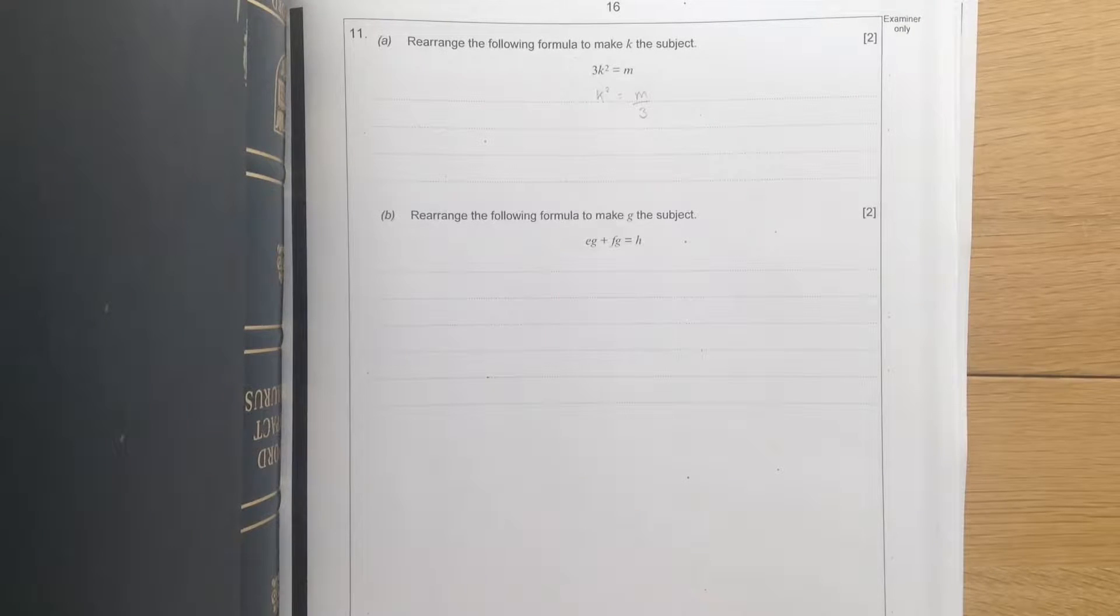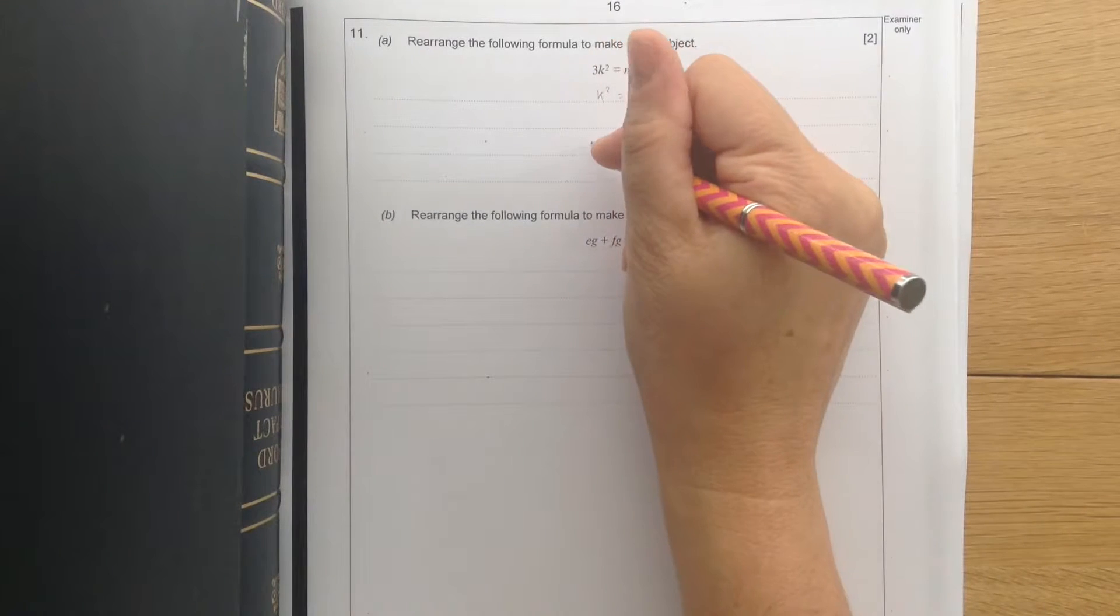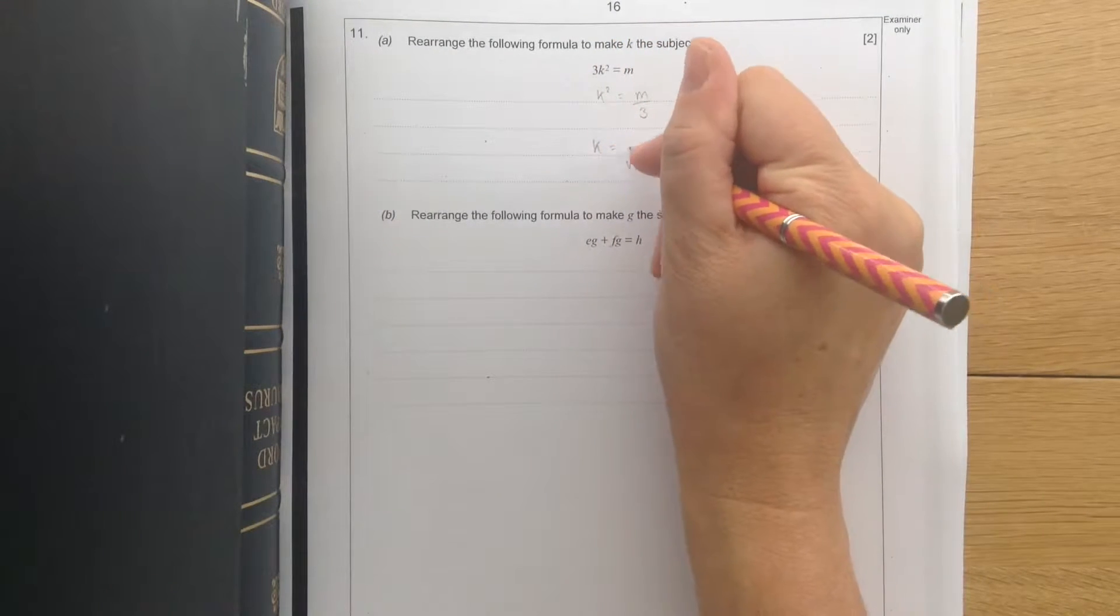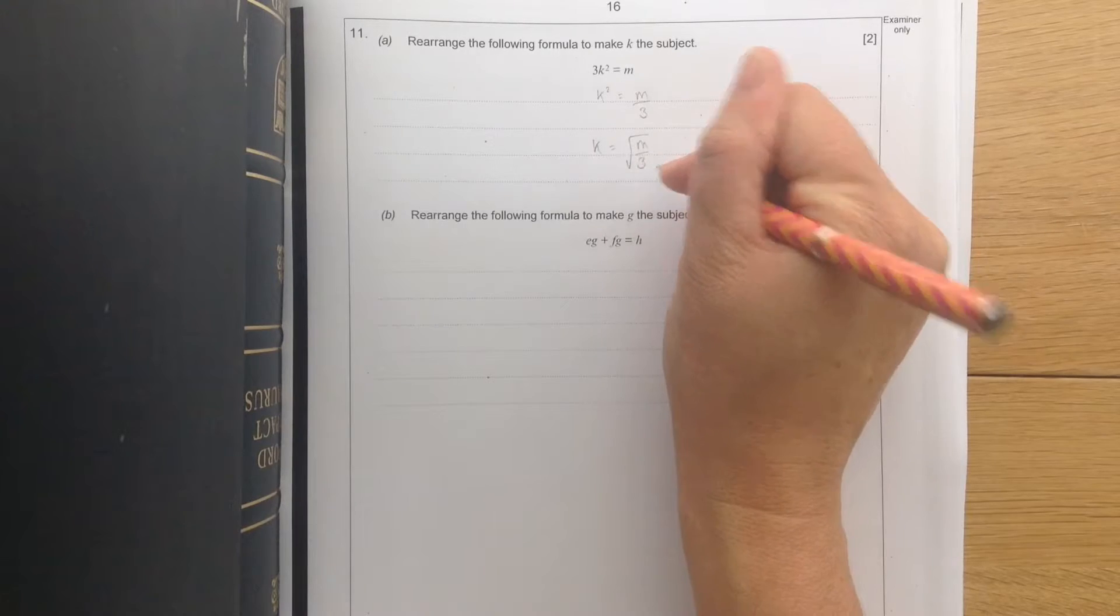To make k the subject then we need to get rid of that squared. So the opposite of squaring is square rooting. So that's what we're going to do next. We're going to do k equals the square root of m over 3.